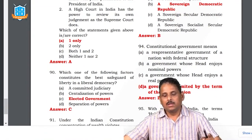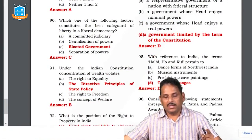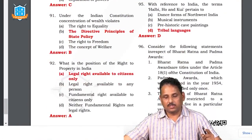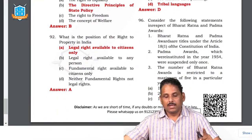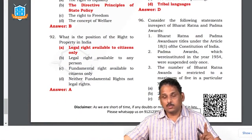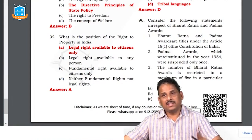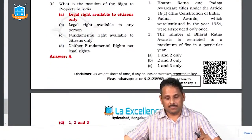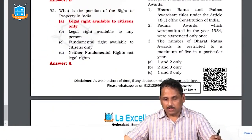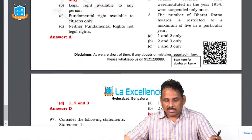With reference to India, Halbi and Gondi are tribal languages. Question 95: regarding Bharat Ratna and Padma awards — the Supreme Court clearly stated these are not titles, they are awards, so the first statement is wrong. Padma awards, instituted in 1954, were suspended twice — once when Indira Gandhi came to power after the Janata government, and again in the 1990s. The number of Bharat Ratnas is restricted to three per year, not five. So all three statements — one, two, and three — are wrong statements.